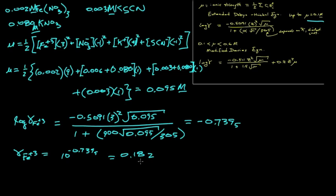This suggests that the effective reactivity of the iron has dropped to less than 20% of what it was before we added the potassium nitrate salt. So the activity of the iron 3 is the activity coefficient times the original concentration, 0.002 molar, or 3.64 times 10 to the minus 4 molar.